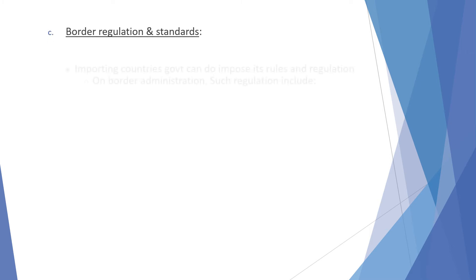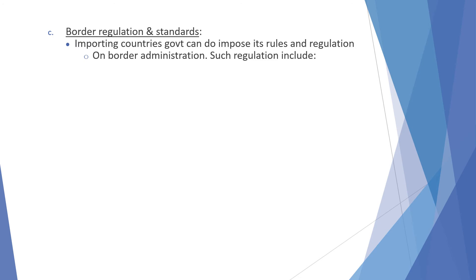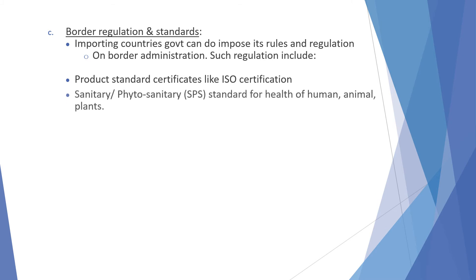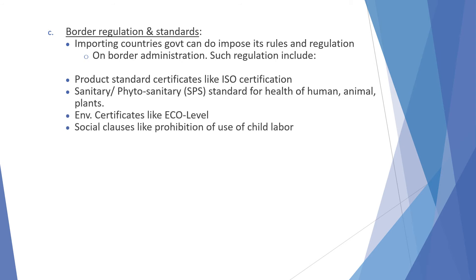Border regulation standards: the importing country government can impose rules and regulations on border administration. Such regulations include product standards, certification like ISO certification, sanitary and phytosanitary (SPS) standards for human health and plant and animal health, and environmental certificates like CE eco-label, and social clauses like provisions on the use of child labor.